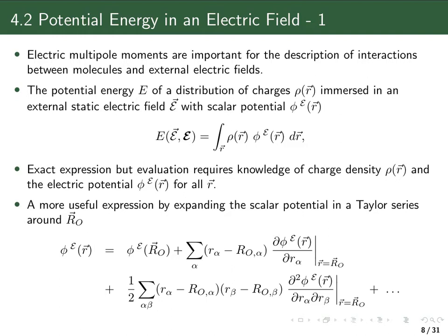This is a generalization to a continuous charge distribution. For a single charge, the energy would simply be the product of charge times potential. But since we have a continuous charge distribution, we must take this product at every point in space and integrate over it. As in the last lecture, we need the charge density at every point in space to evaluate this integral, and again we don't really want to do that — so we will use a Taylor expansion of our scalar potential.